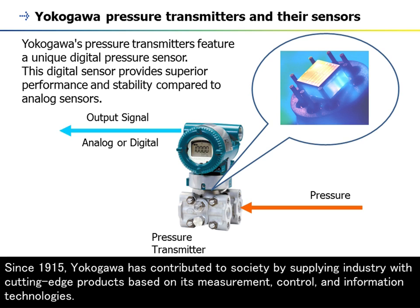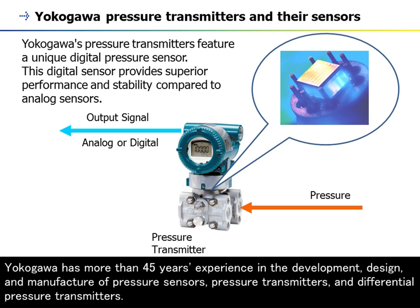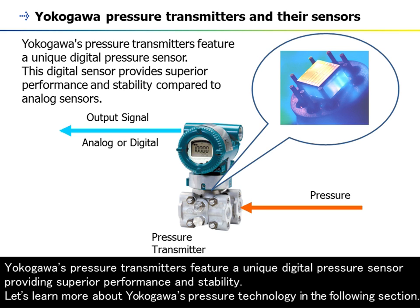Since 1915, Yokogawa has contributed to society by supplying industry with cutting-edge products based on its measurement, control, and information technologies. Yokogawa has more than 45 years of experience in the development, design, and manufacture of pressure sensors, pressure transmitters, and differential pressure transmitters. Yokogawa's pressure transmitters feature a unique digital pressure sensor providing superior performance and stability.